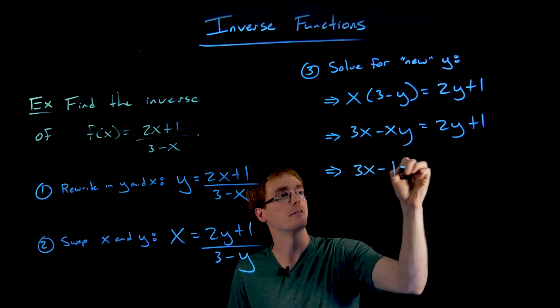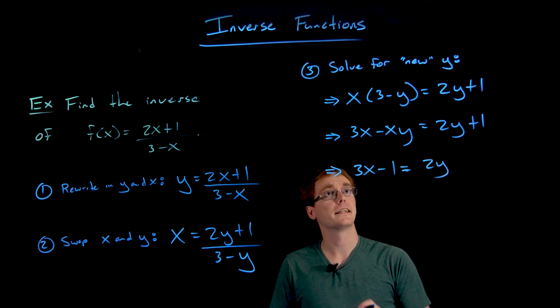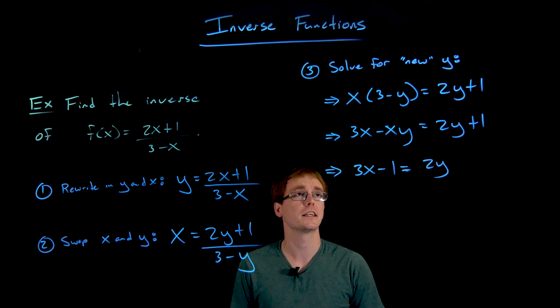We already had this 2y on the right-hand side. We need to get rid of this xy on the left-hand side or a negative xy on the left-hand side. And we do that by adding xy to each side.